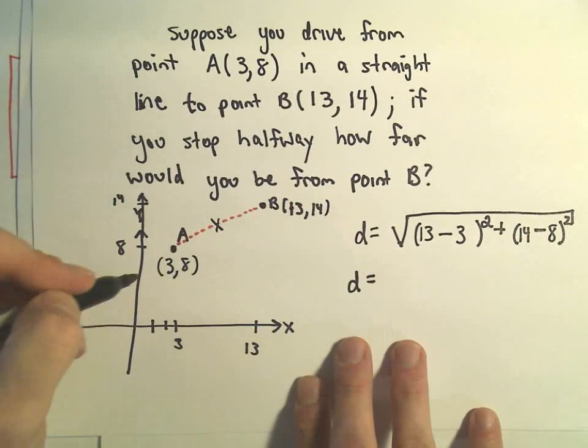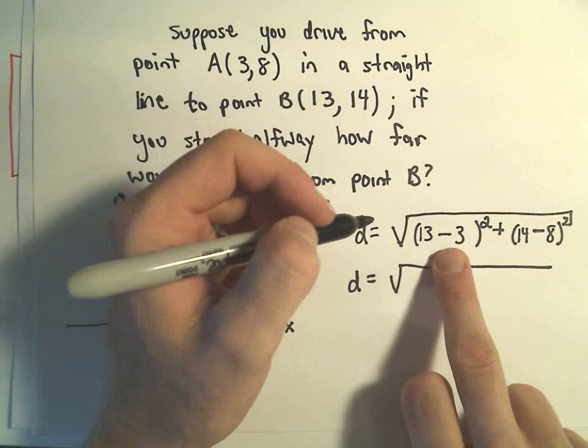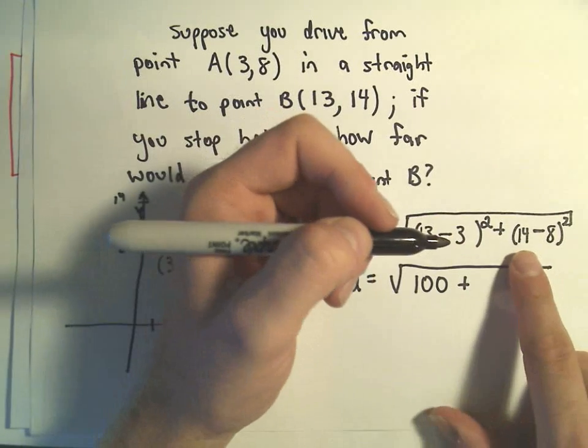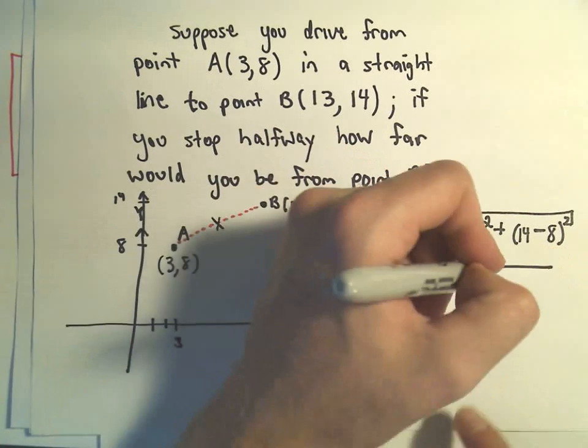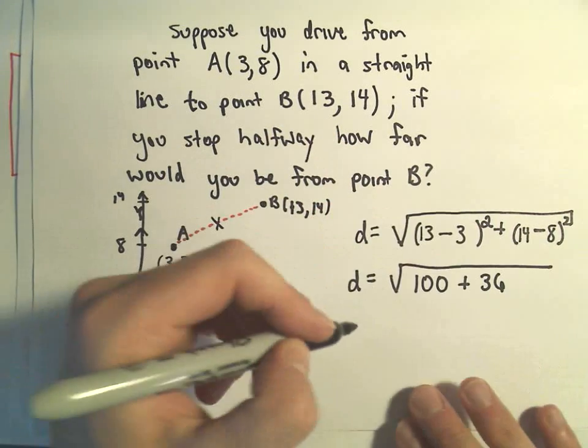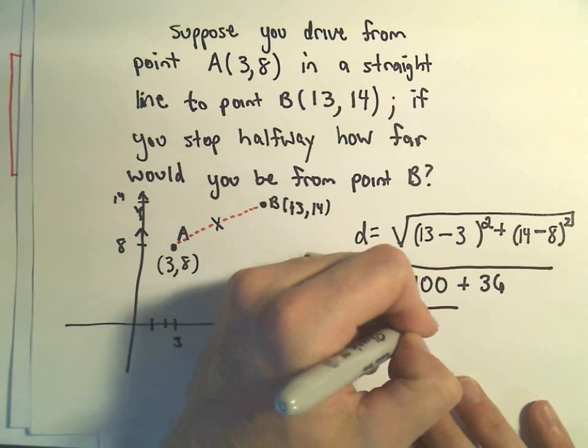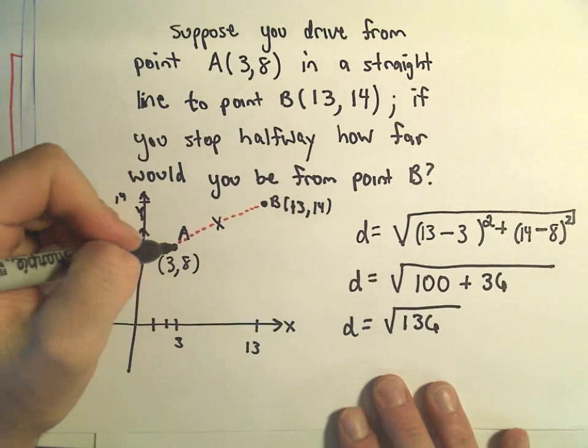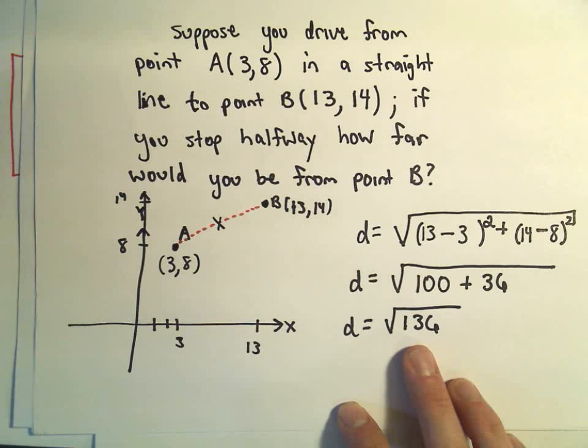Now we just have to simplify, so the distance between A and B would be, let's see, 13 minus 3 is 10, 10 squared would be 100. 14 minus 8 is 6, 6 squared is 36. So the distance would be √136, and I'm gonna try to simplify this a little bit. The distance between point A and point B is basically the square root of 136 units.